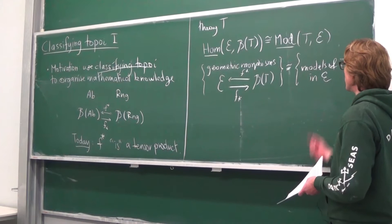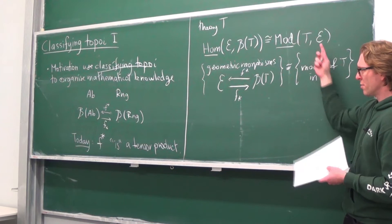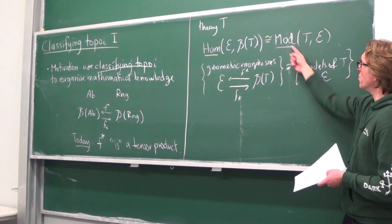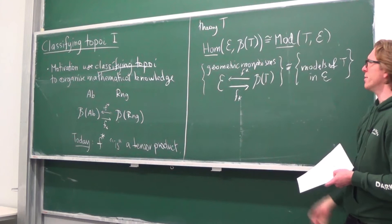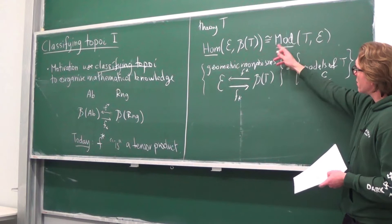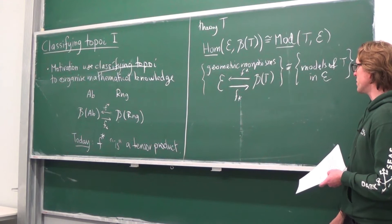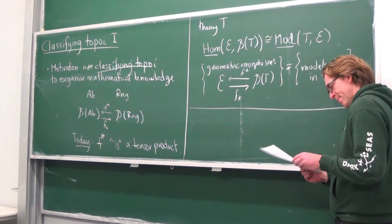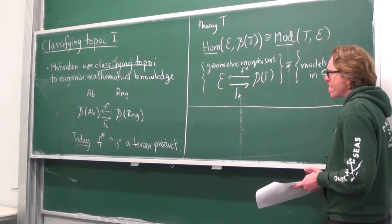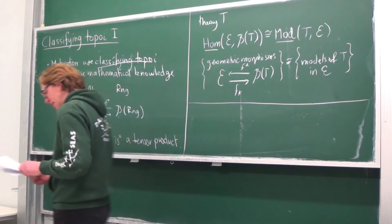For instance, if E was the topos of sheaves on a topological space and T was the theory of abelian groups, the models would be exactly the abelian category of sheaves of abelian groups. B(T) classifies the theory if there is a natural isomorphism of these two categories as E varies. There's more motivation in the notes, but I'll jump straight into the tensor products.